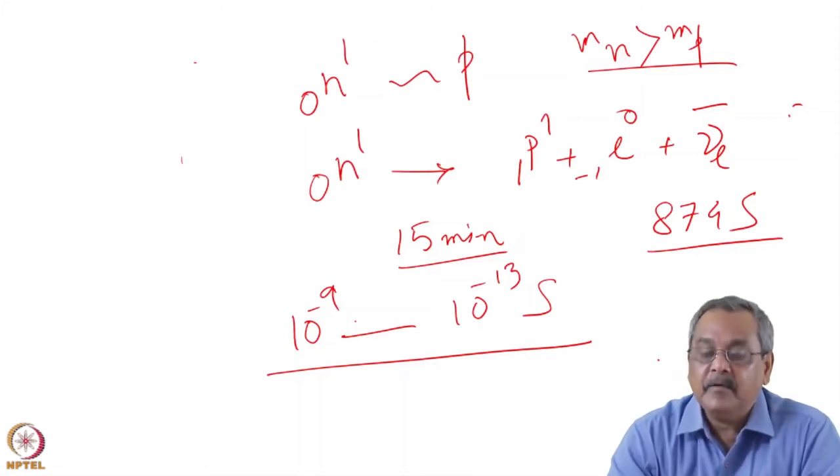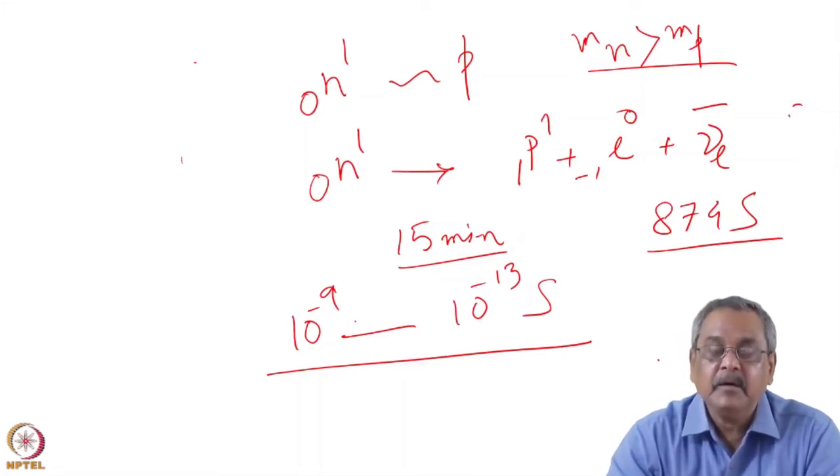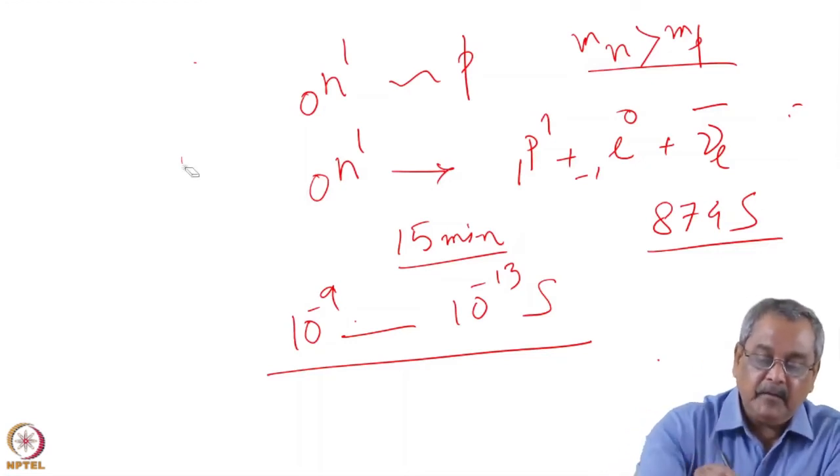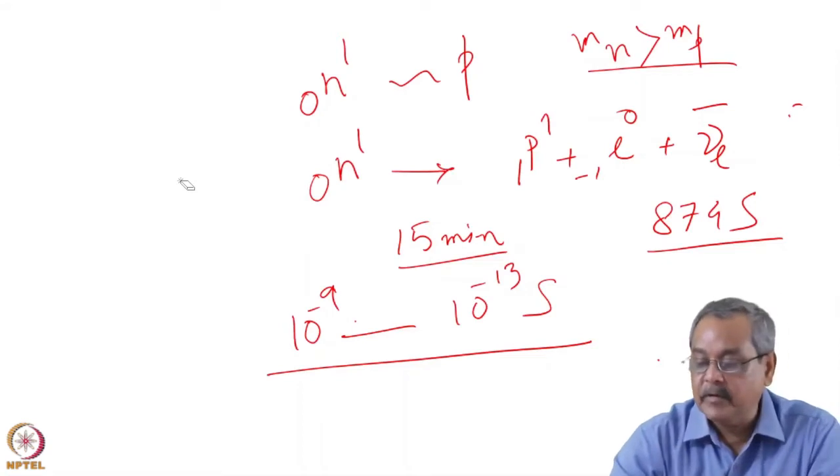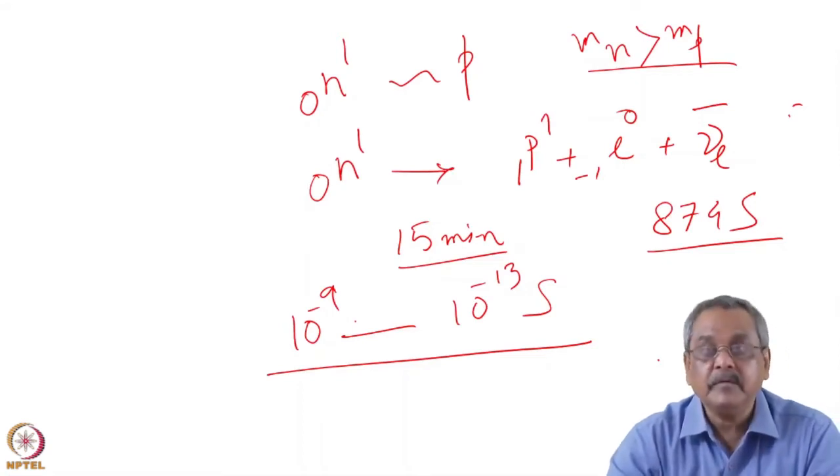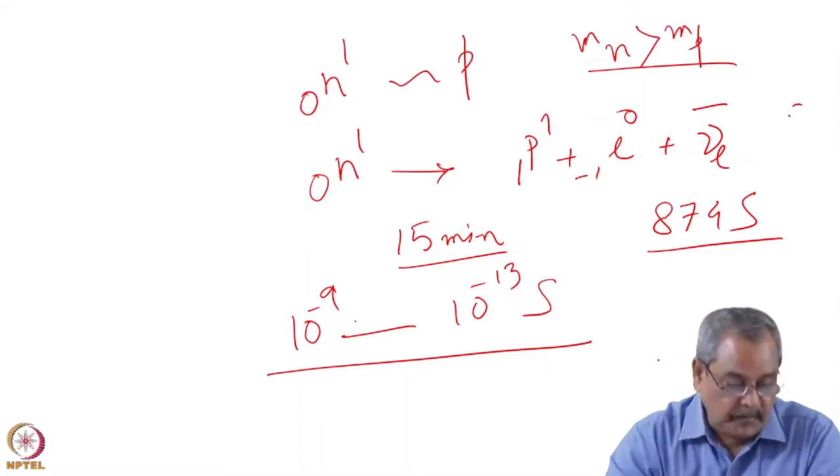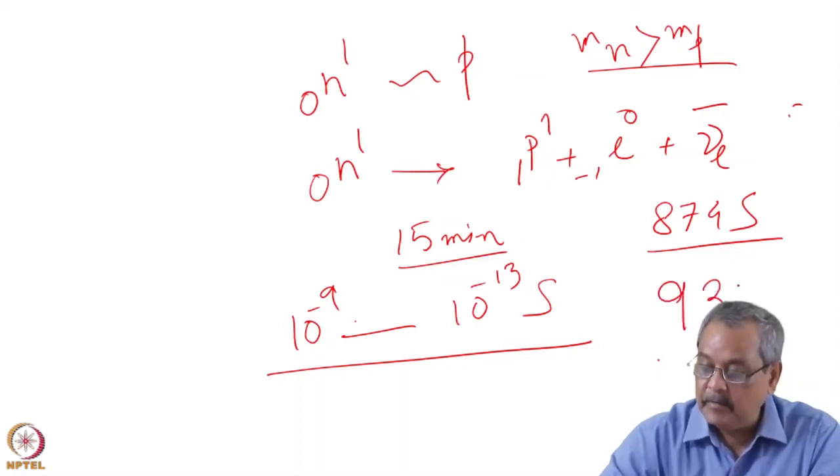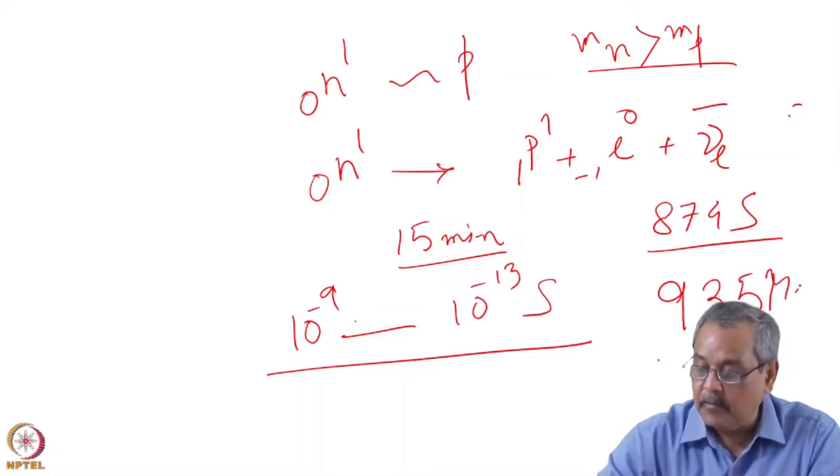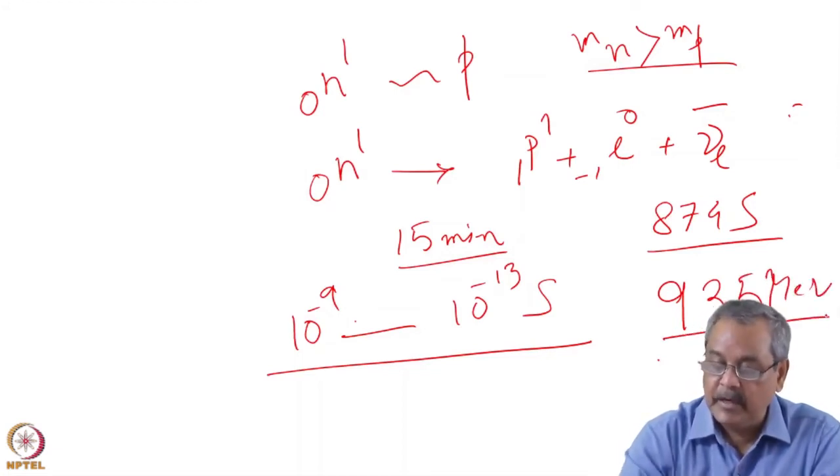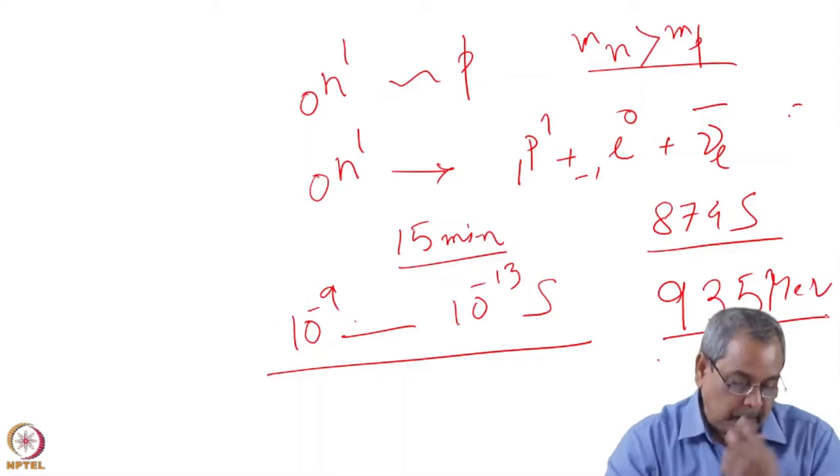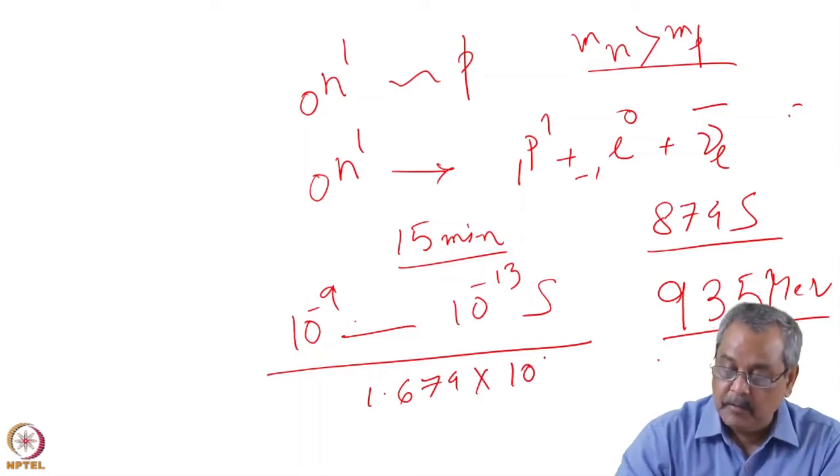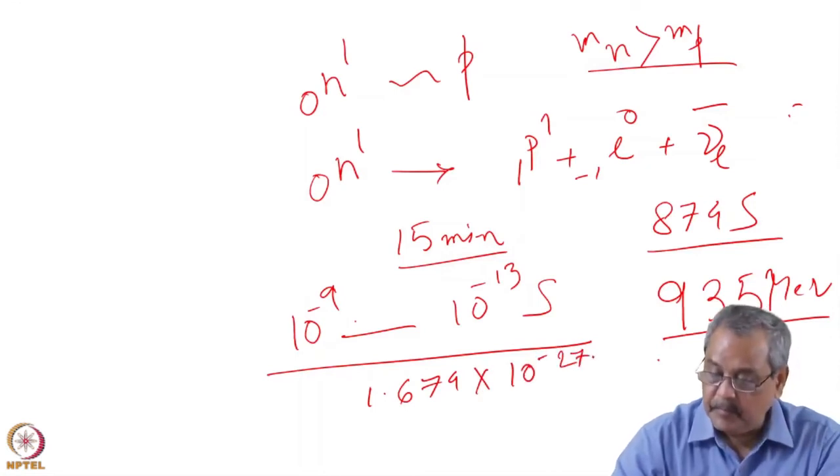Though neutron lifetime measurement is still a major serious issue and in several reactors, particle physicists work on them because these have consequences on the lifetime of the universe but that's beyond the scope of the present topic. And neutron mass, if you talk about energy, it's 935 mega electron volts. Otherwise, it is around 1.674 into 10 to the power minus 27 kg.